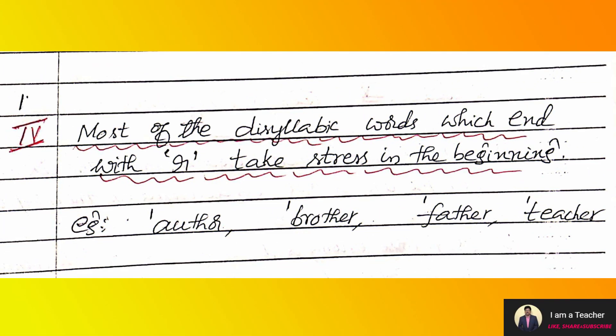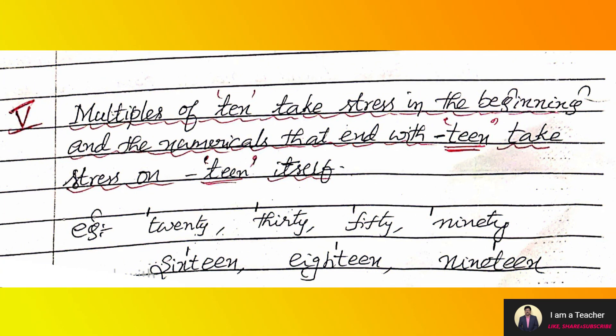Most disyllabic words which end with the 'r' sound take stress in the beginning. For example: author, brother, father, teacher, sister — these are disyllabic words with two syllables ending in 'r', so stress goes in the beginning. Multiples of 10 — 20, 30, 50 — take stress in the beginning. Numbers ending in '-teen' — 13, 14, 15, 16, 17, 18, 19 — take stress on 'teen' itself.